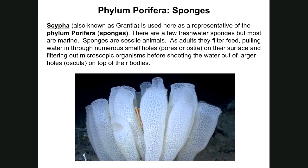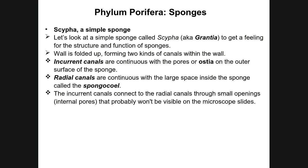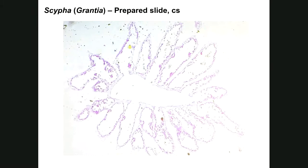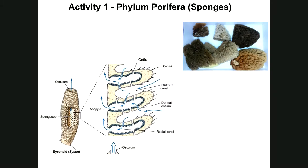Normally what would happen is you would come into the lab, there would be some actual samples of sponges — some would look like the sponges here. Then you would transition into looking at sponges like I have up here, and we would have some prepared slides for you to look at. Since we're limited, one of the samples you're going to label is going to look like this — this is a cross section of a type of sponge called Scypha or Grantia.